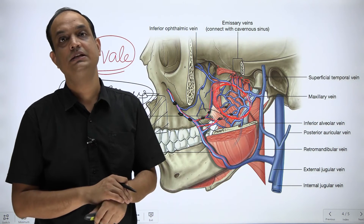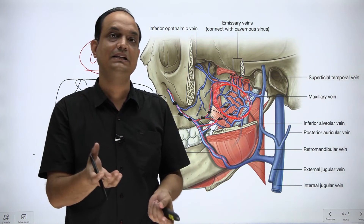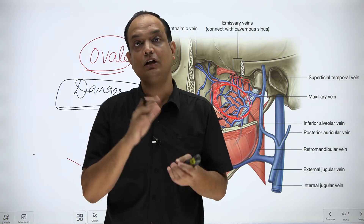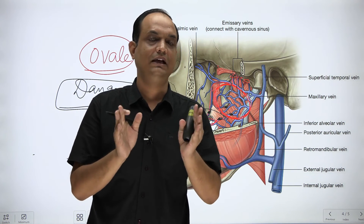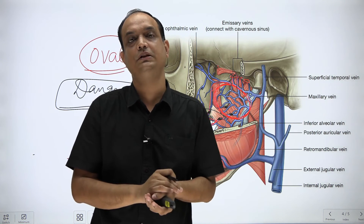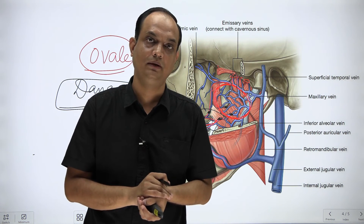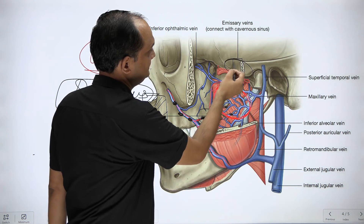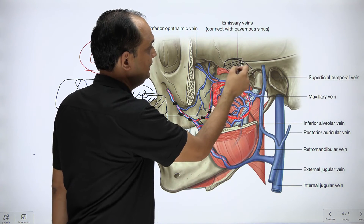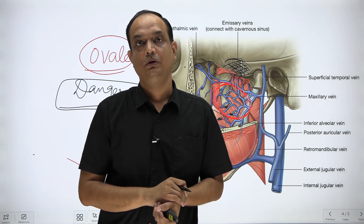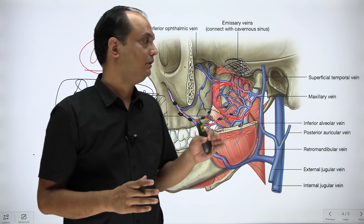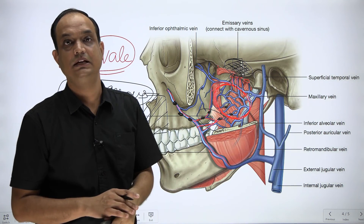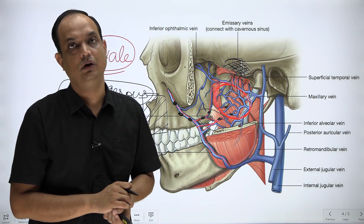It is important to remember the pathway of this retrograde infection. The cavernous sinus has cranial nerves in its wall — mainly those going to the orbit — and it also extends into the orbit. So if thrombosis or infection occurs in the cavernous sinus, the patient will have complaints related to the eyeball and vision. At the end of this class we should know: what is the dangerous area of the face, why it is dangerous, and what is the pathway of retrograde infection.